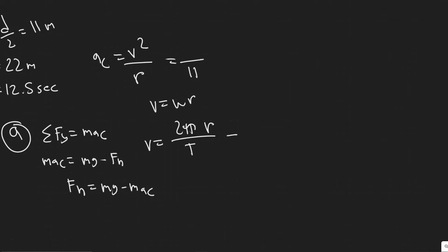So solving for this, 2 pi times R, which is 11 divided by 12.5. So plug this in, 2 times pi times 11, dividing by 12.5, you're going to get the velocity is equal to 5.529.